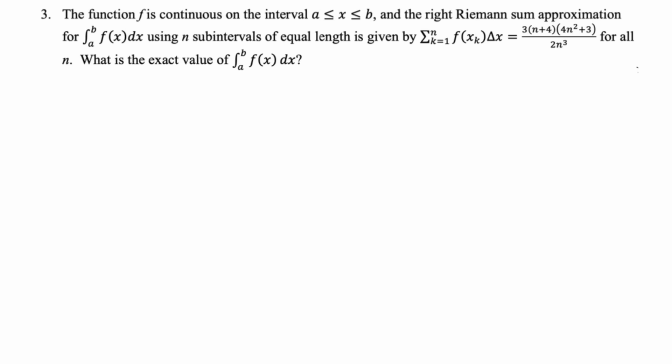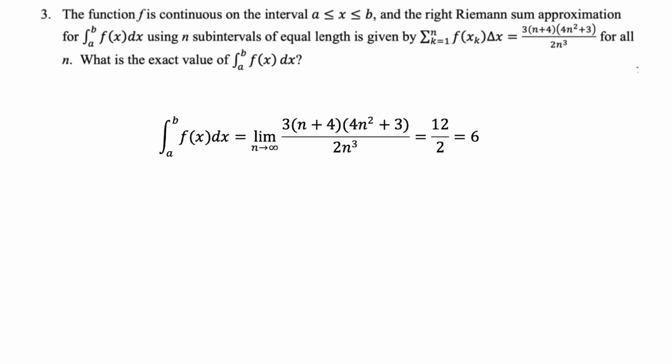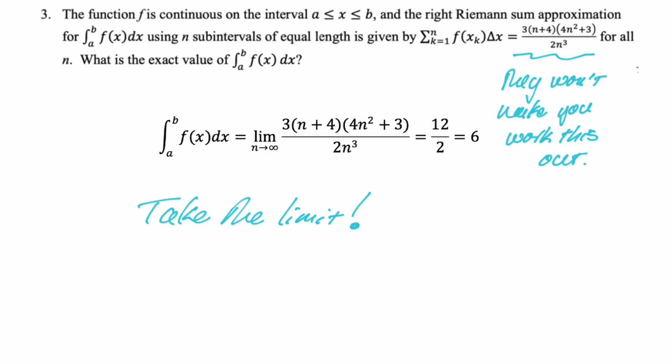They're telling you the Riemann sum is that expression. What is the exact value of the integral? Just take the limit of that expression — the limit of a Riemann sum is the definite integral. They give you the sum; take the limit. They're not going to make you work it out from scratch; they'll give it to you. There's an alternative problem type where they give you the expanded Riemann sum and ask for the definite integral — I have a separate video on that.